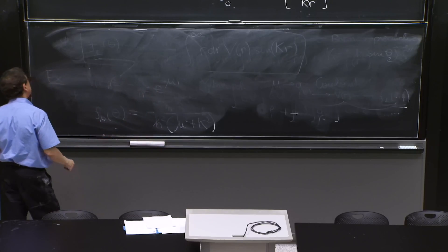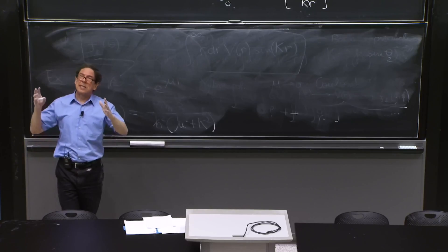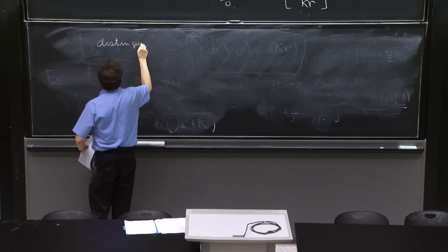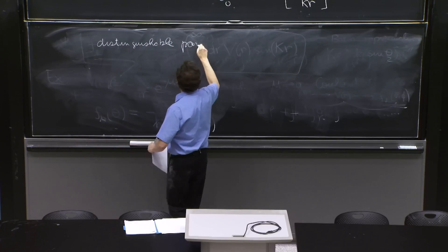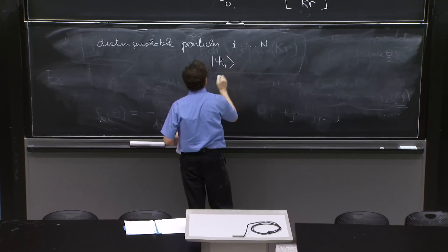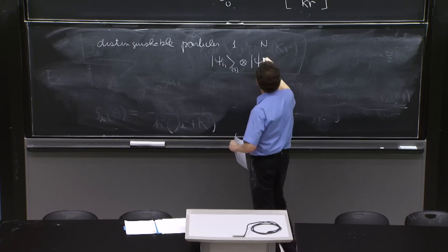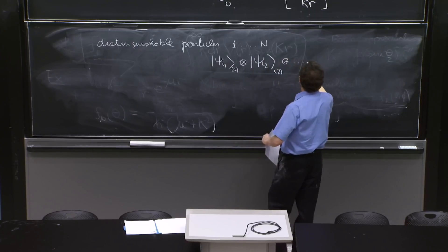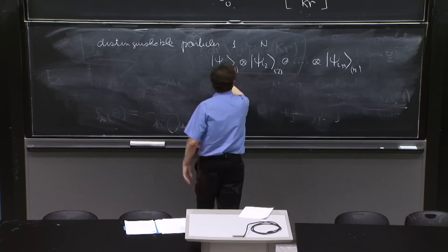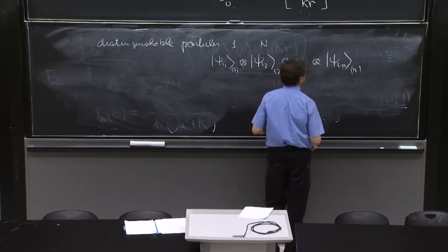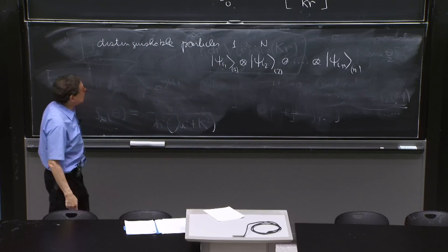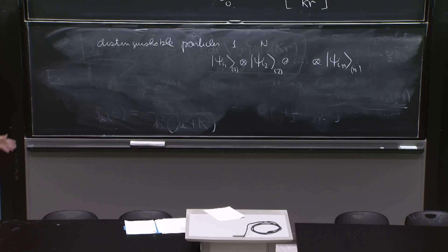The problem is that when we had distinguishable particles in quantum mechanics, we used a tensor product to describe a state. For distinguishable particles 1 up to n, we write psi_i1 for particle 1, psi_i2 for particle 2, up to psi_in for particle n — this says particle 1 is in state psi_i1, particle 2 is in state psi_i2, and so on. These states are one of many possible states. That's all good, and this is correct for distinguishable particles.